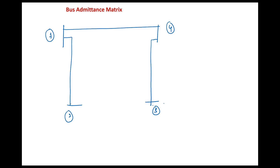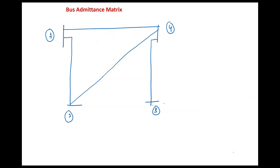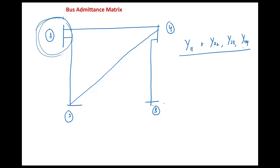Since two lines are missing, four elements in the Y-bus matrix are zero. Properties of the Y-bus matrix: (1) Size is n×n for an n-bus system. (2) It is a symmetrical matrix because the power system network is passive. (3) Most elements are zero, making it a sparse matrix, since it is not possible to connect every bus with every other bus.